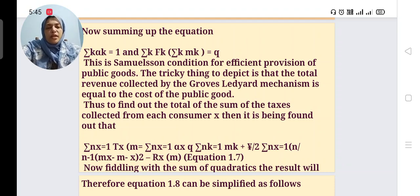This is Samuelson condition for efficient provision of public goods. The key thing to depict is that the total revenue collected by the Groves-Ledyard mechanism is equal to cost of the public goods. Thus to find out the total of the sum of the taxes collected from each consumer x, then it is being found out that Σ(x=1 to n) tx.